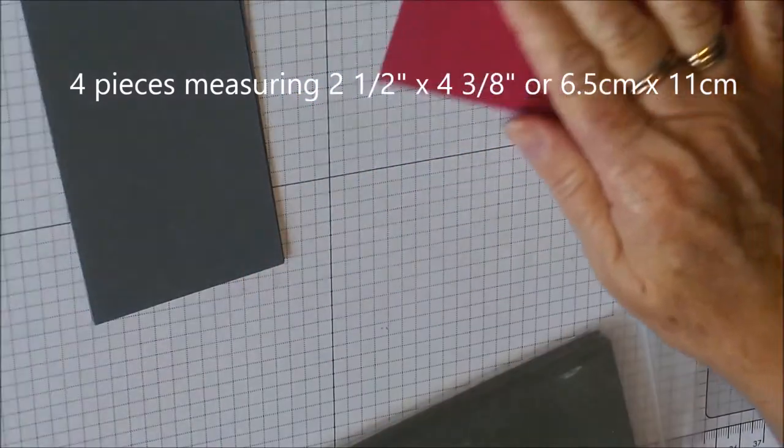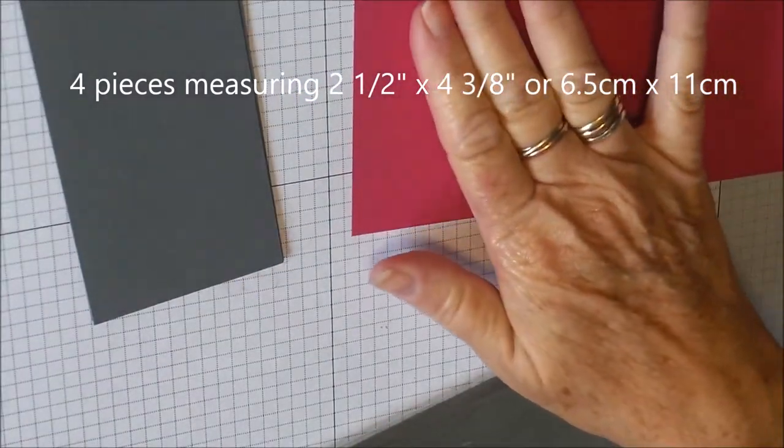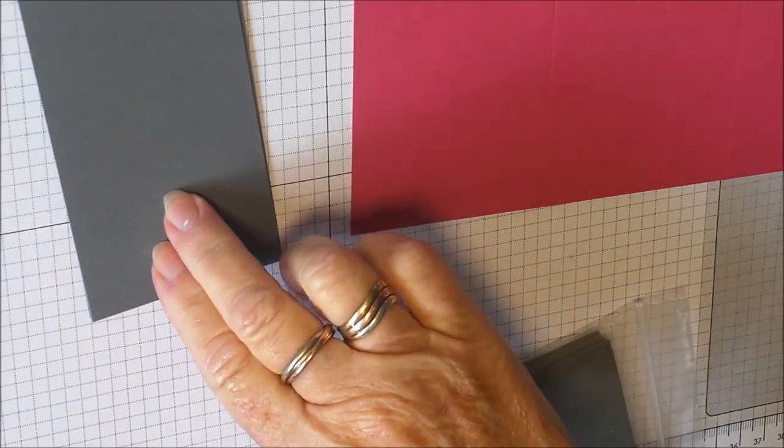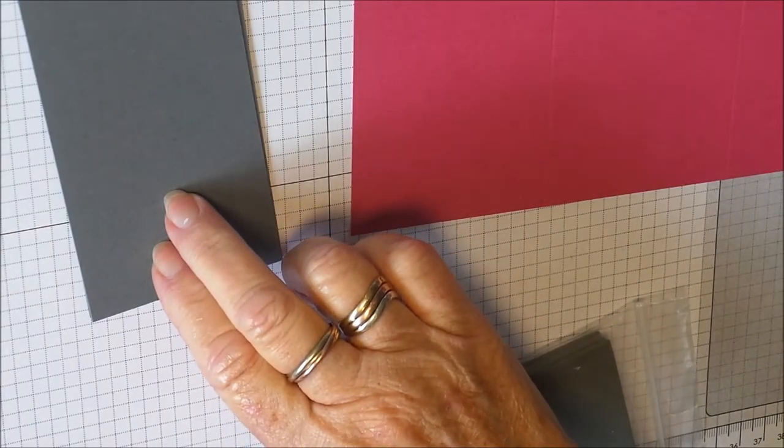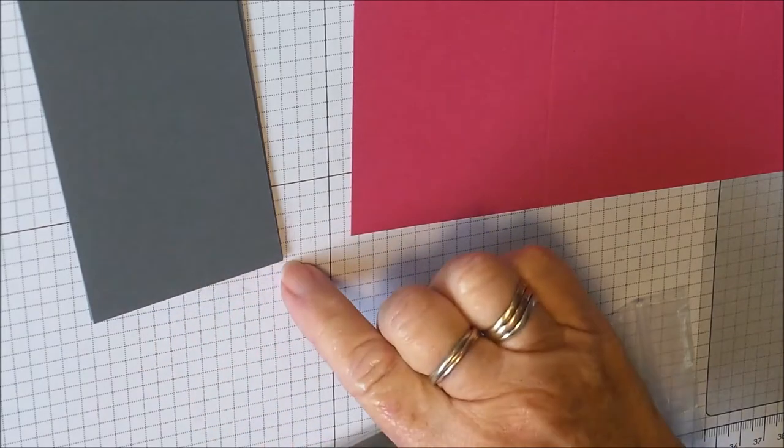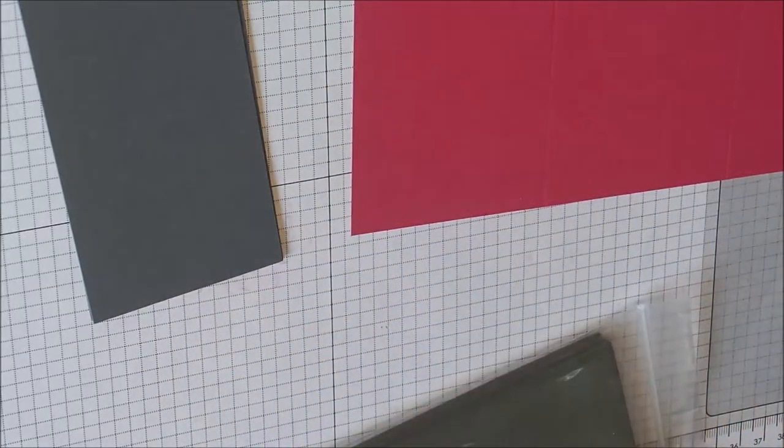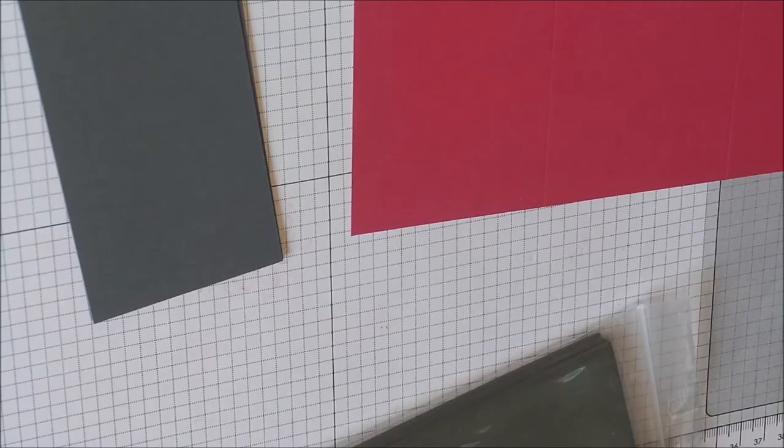So that's your card base. Then you need four pieces of your first mat, so it'll go on top of the Rose Red. I've decided on Basic Grey, and they need to measure two and a half by four and three eighths. You need four of those.